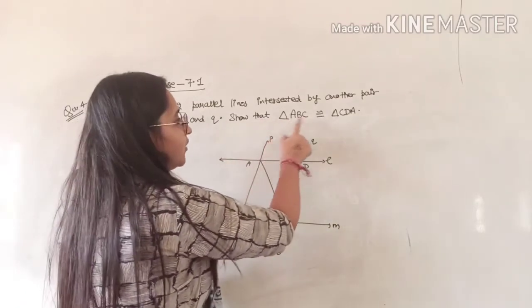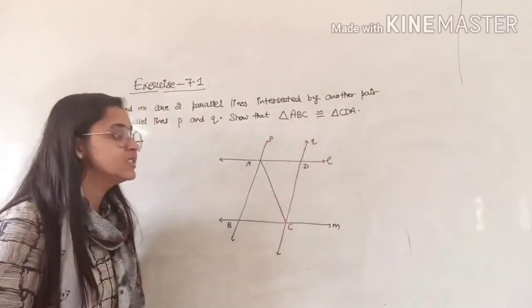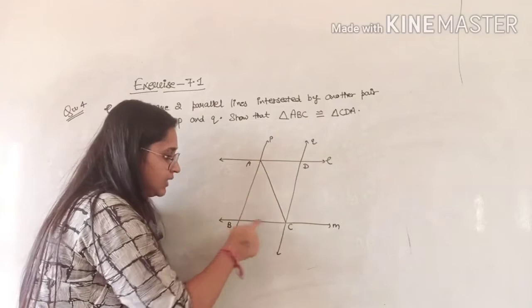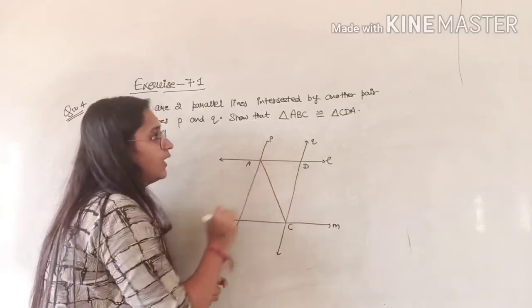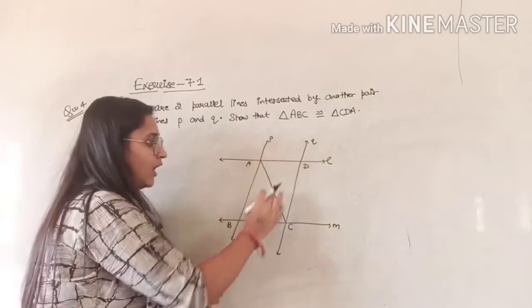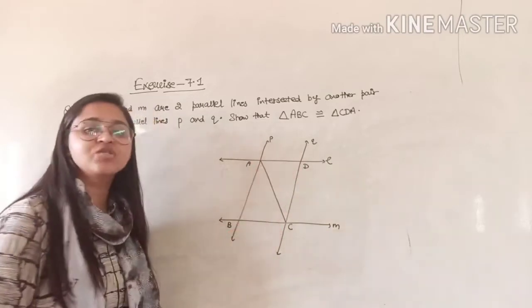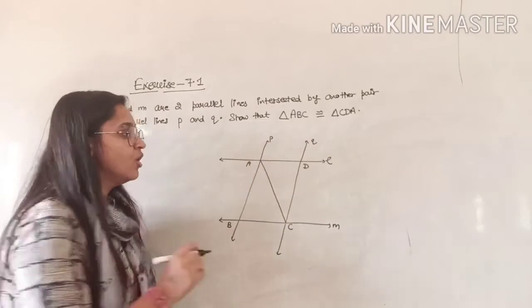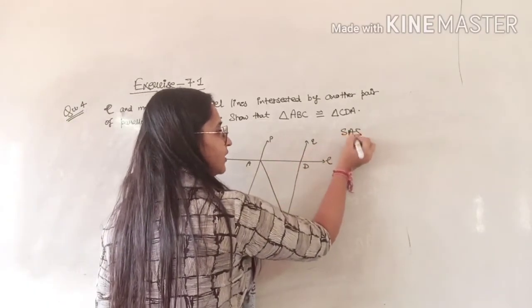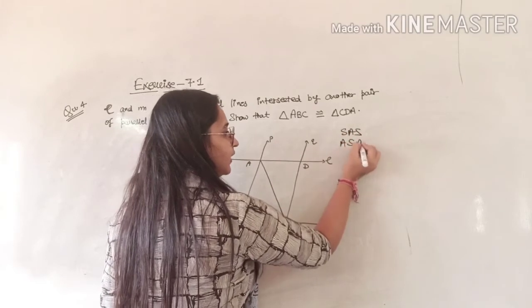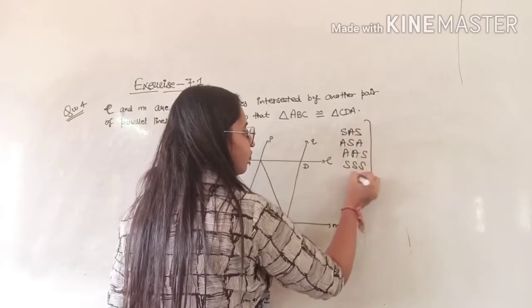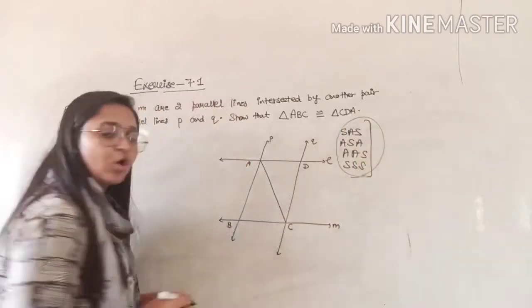We have to show that triangle ABC is congruent to triangle CDA. We have discussed four congruence rules: first was SAS, then ASA, then AAS, and then SSS. These are the four rules of congruence.